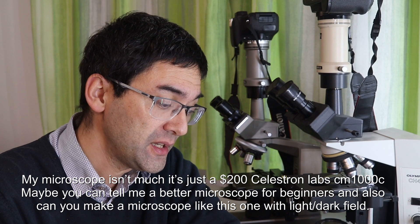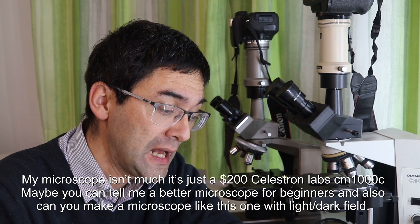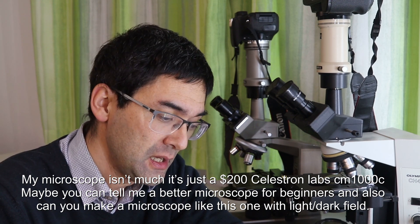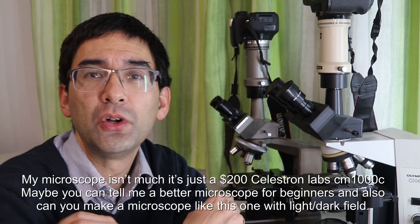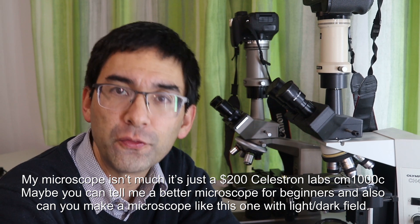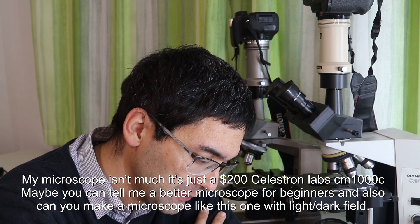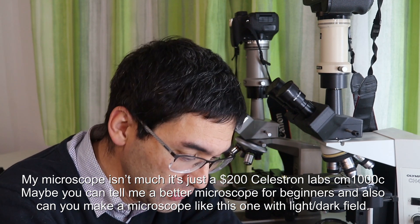So the next question. My microscope isn't much. It's a $200 Celestron Labs CM1000C. Maybe you can tell me a better microscope for beginners, one where you can use also not only bright field but also dark field. Now I need to talk a little bit here. First of all, my honest view on the whole thing. I had a look at the website of this microscope. Looks to be a perfectly decent microscope.